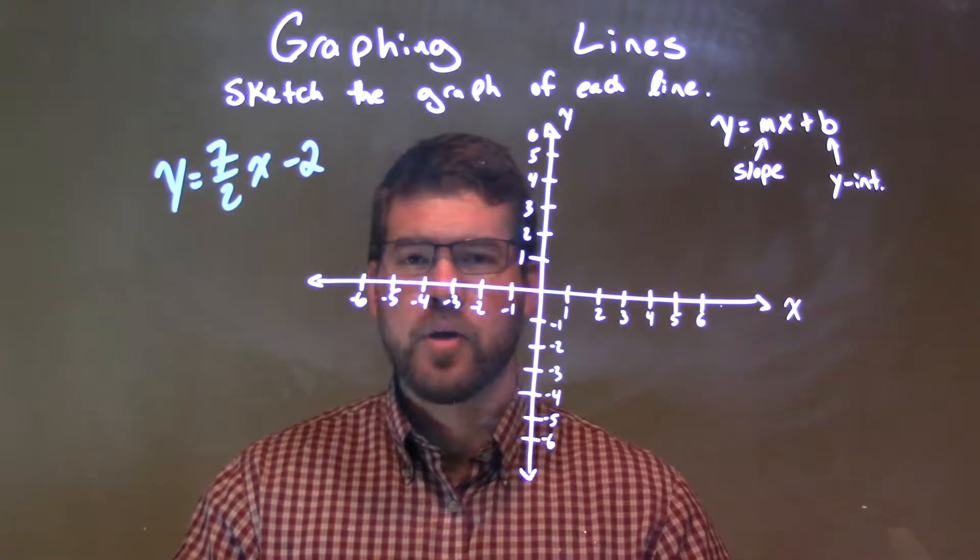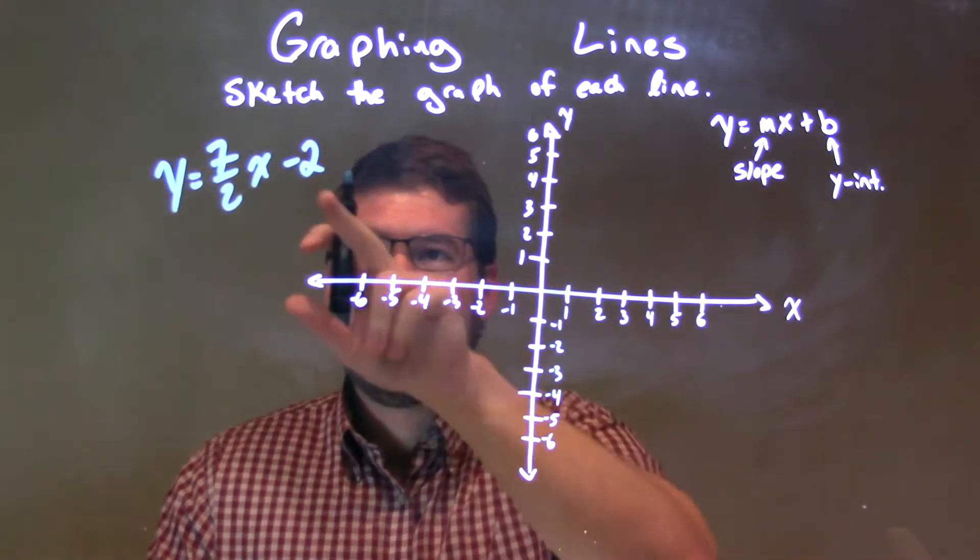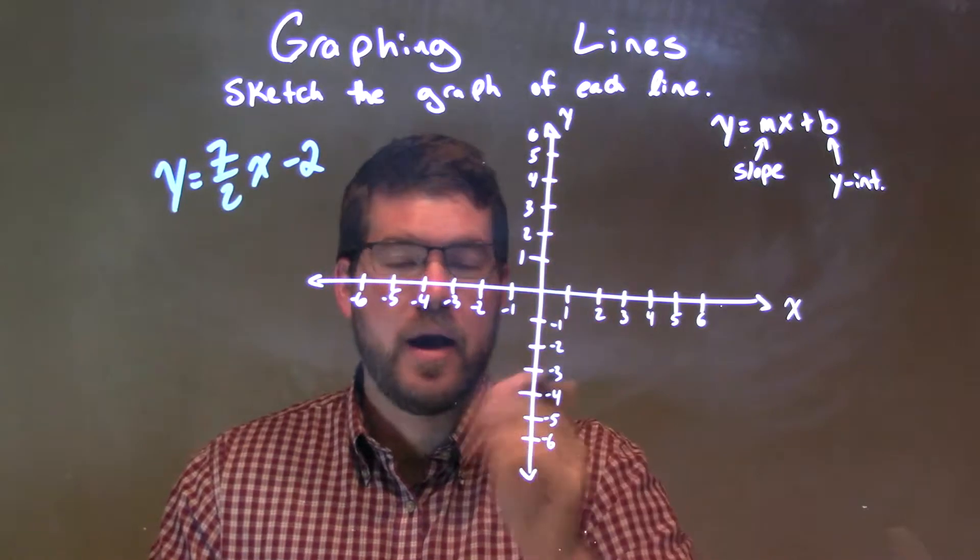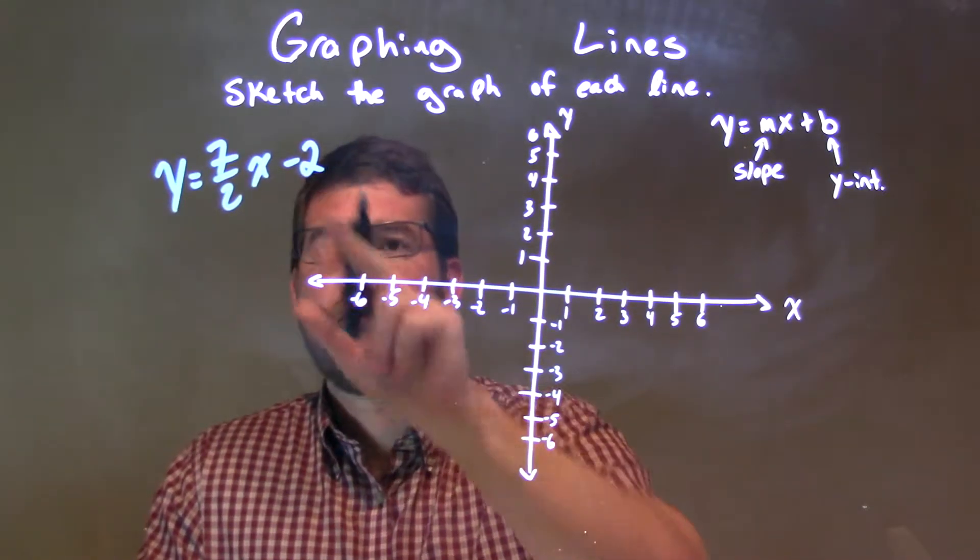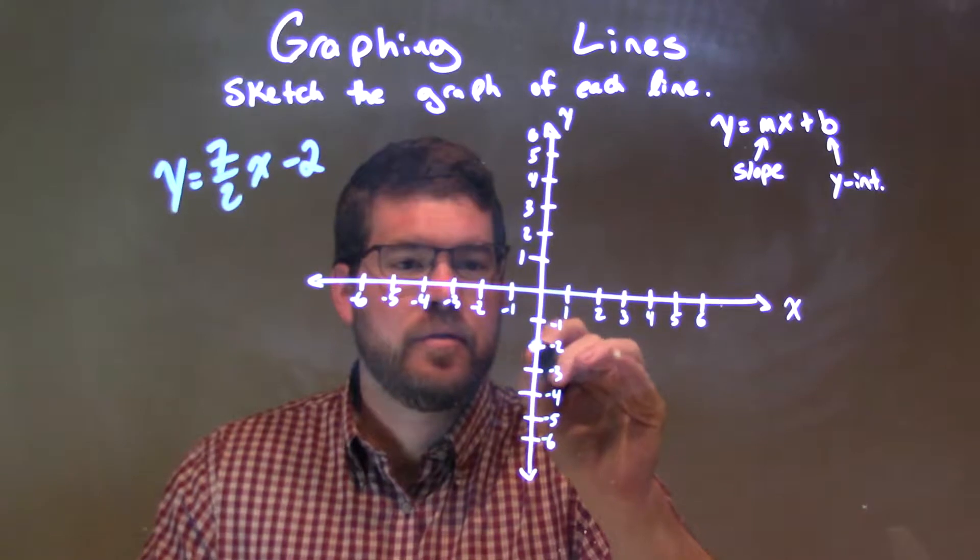Well, first thing I'm looking at here is our b-value, our y-intercept, where it crosses the y-axis. We have a negative 2 right there. So across the y-axis, I have a negative 2.